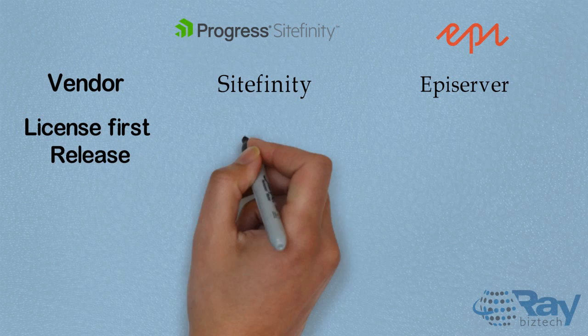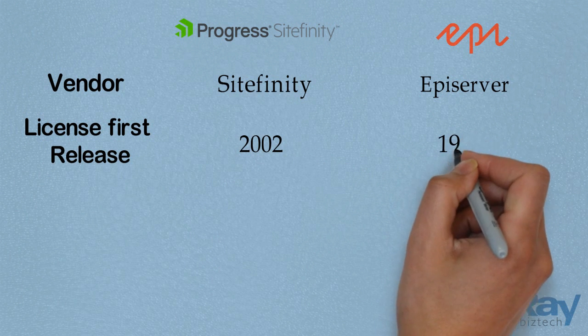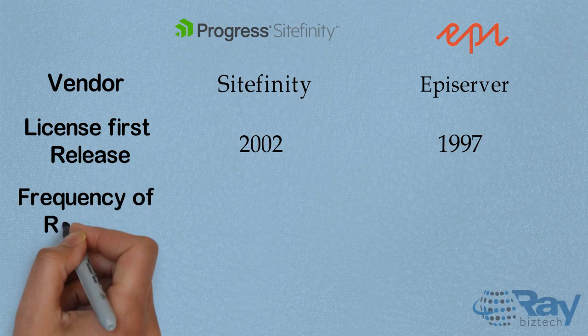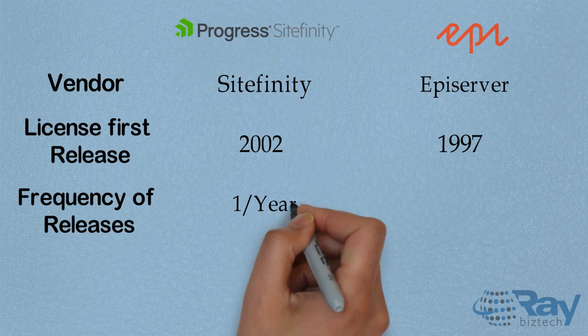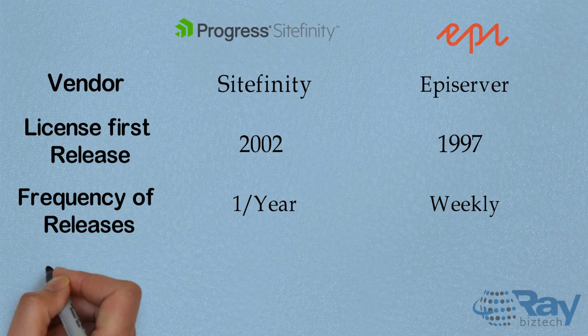License first release: Site Affinity in 2002, API Server in 1997. Frequency of release: Site Affinity releases once per year, while API Server releases weekly.